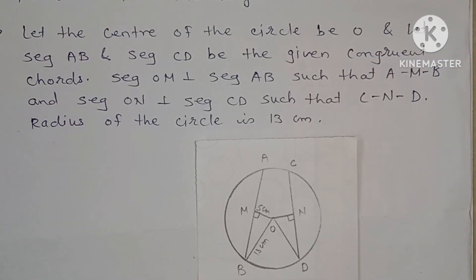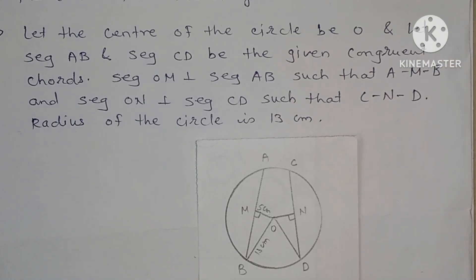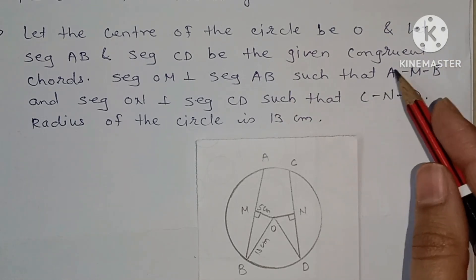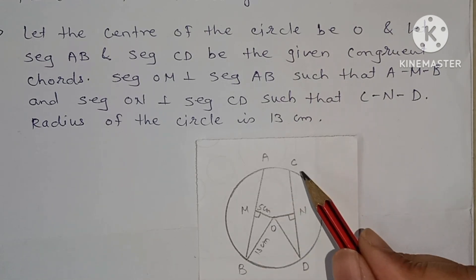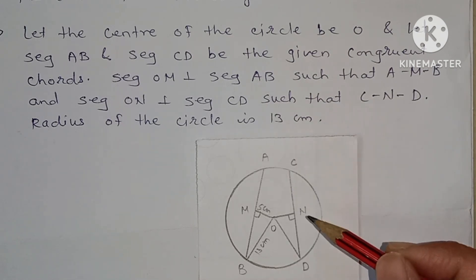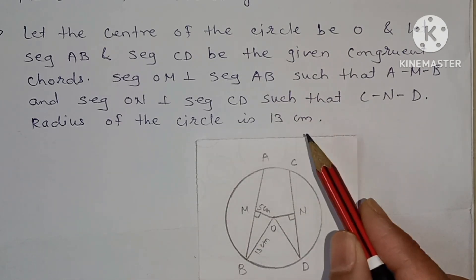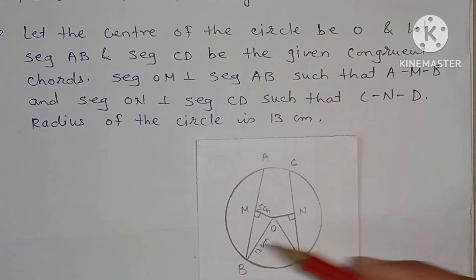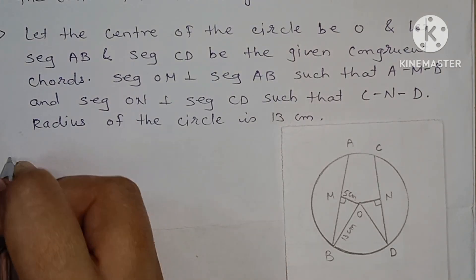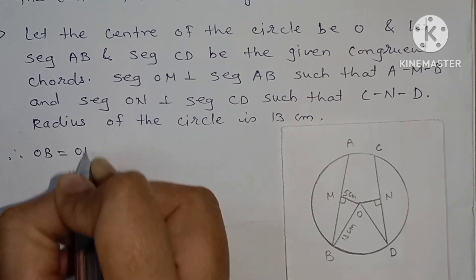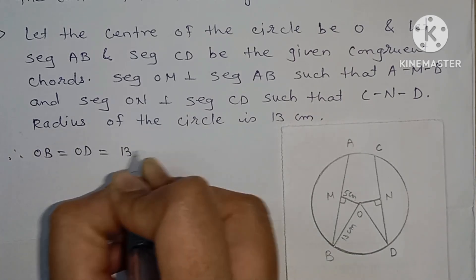Let the center of the circle be O. Let segments AB and CD be the given congruent chords. Segment OM is perpendicular to segment AB such that M is between A and B, and segment ON is perpendicular to segment CD such that N is between C and D. The radius of the circle is 13 centimeters, so OB = OD = 13 centimeters.